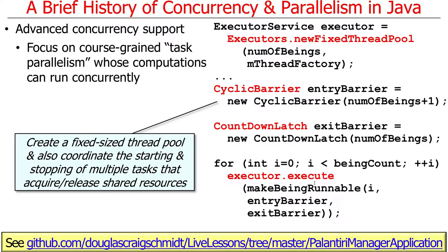There's a little program called the Palantir Manager application you can run as an example. If you take the spring course, you will overdose on various ways to implement it. This particular example spawns a fixed-size pool of threads that all go off and gaze into Palantiri — in Lord of the Rings, a magic seeing stone you can gaze into to communicate. This example emulates that. It uses things like cyclic barriers to mediate access to threads. It's very geeky but a cool example of concurrency.